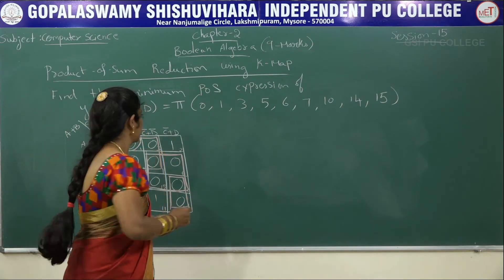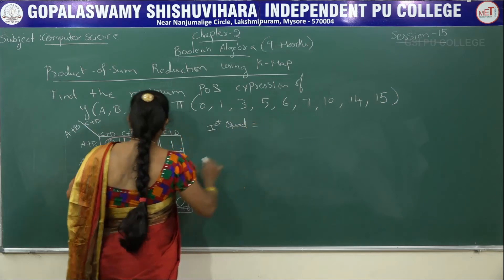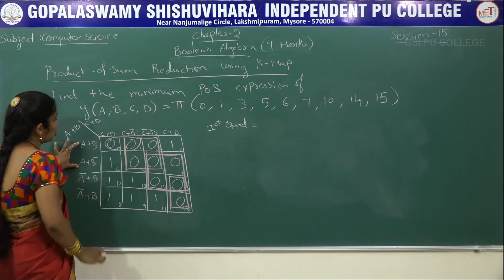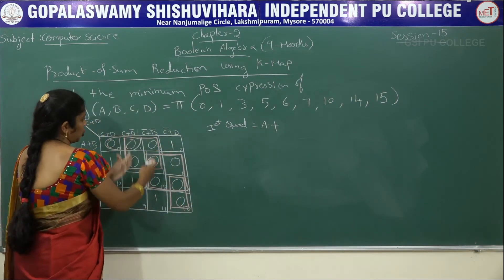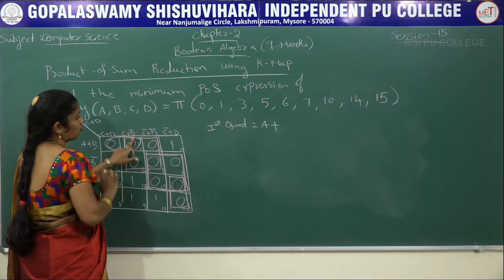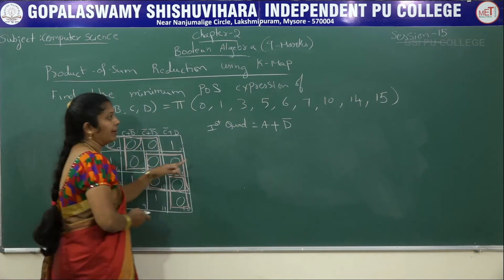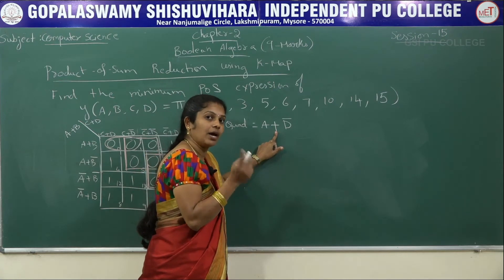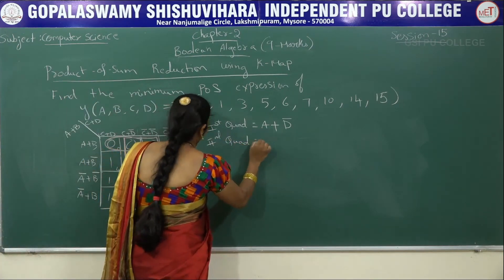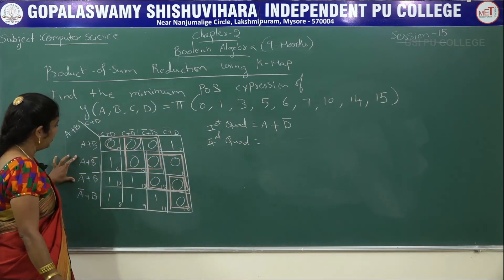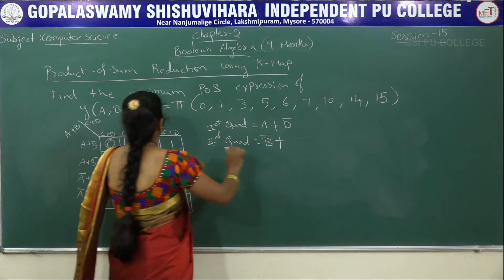How to write the reduced SOP form? For the first quad, take the first two rows — the common factor is A. Column-wise, the common factor is D bar. So the first quad gives A plus D bar. In maxterm we write plus, whereas in minterm we use the dot operator. For the second quad, B bar is the common row factor, and column-wise D and D bar cancel, so the common factor is C bar. Second quad gives B bar plus C bar.